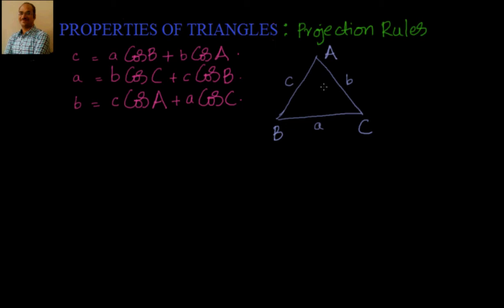In a triangle, when you want to apply trigonometry, you should make it a right-angle triangle — that's the basics. So what we will do now is make it a right-angle triangle. How to make it is very simple: I have just drawn a perpendicular. Now you can see that — let's take A.